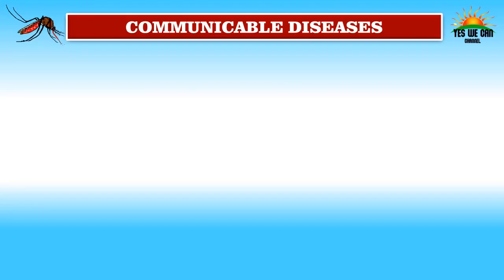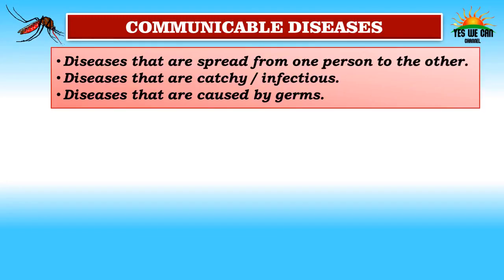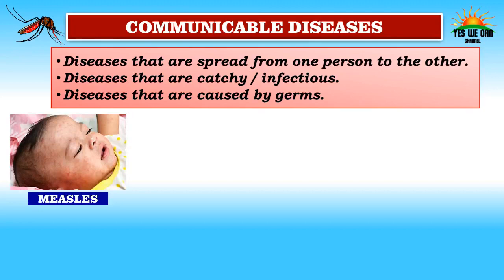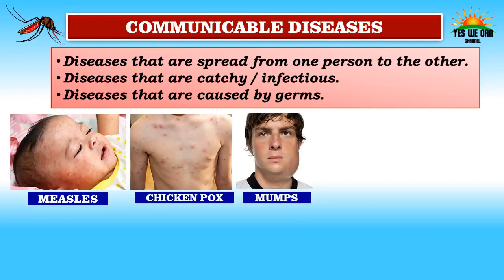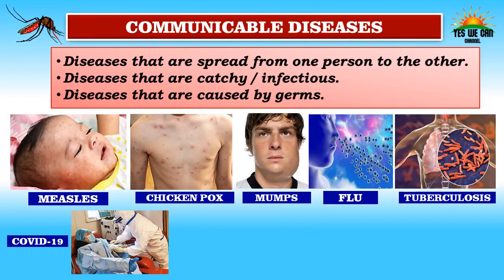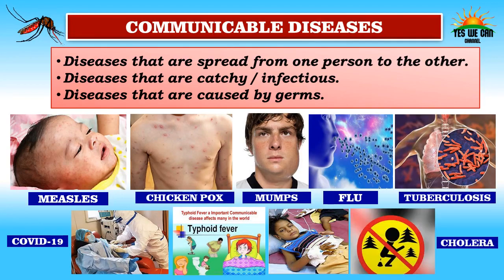Mosquitoes spread diseases like malaria, dengue, chikungunya, filaria, encephalitis, etc. Diseases that spread from one person to another are called communicable diseases — they are infectious and caused by germs. Some more examples of communicable diseases are measles, chicken pox, mumps, flu, tuberculosis, COVID-19, typhoid and cholera. All these diseases are highly contagious.